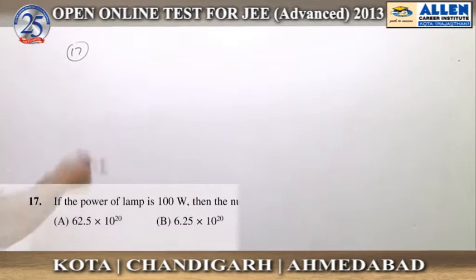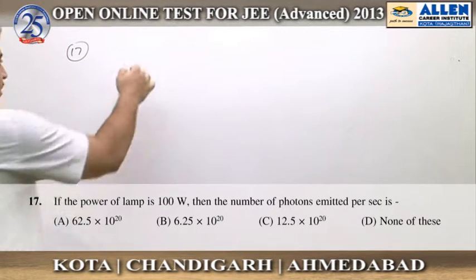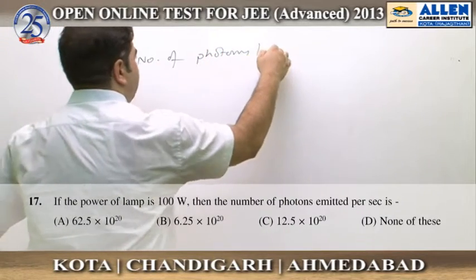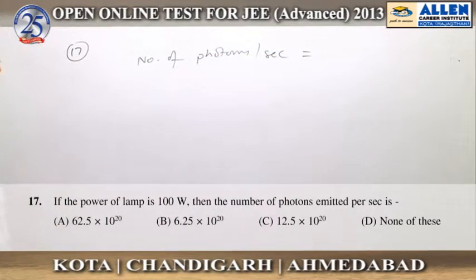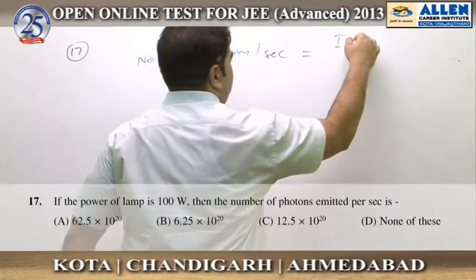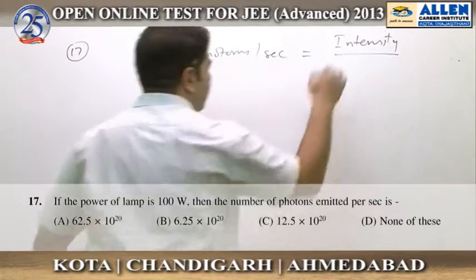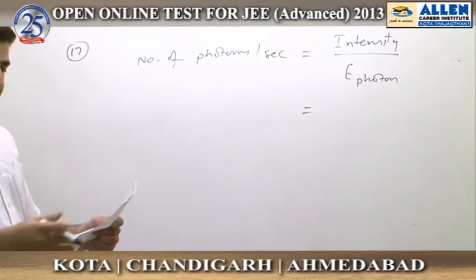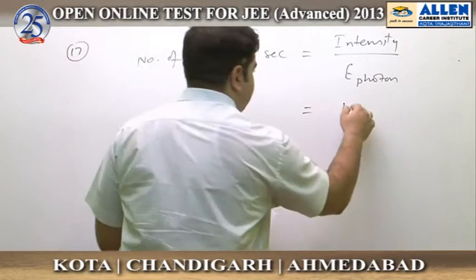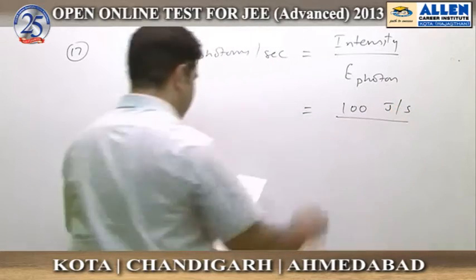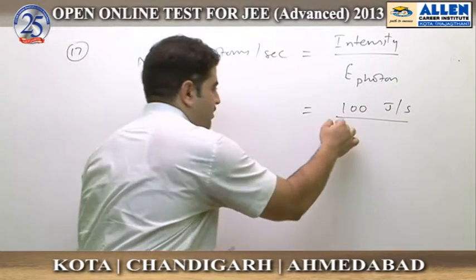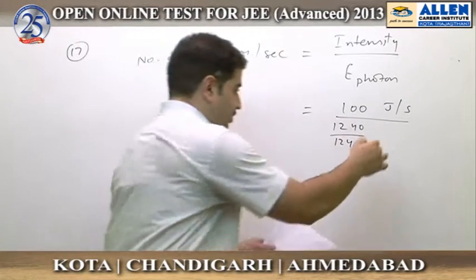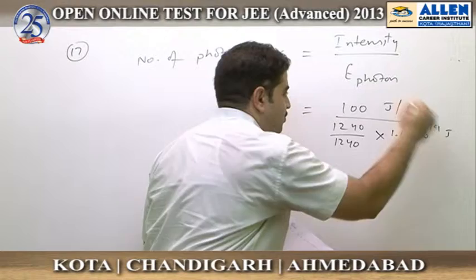In question number 17, we have been asked to calculate the number of photons per second. The number of photons per second can be calculated using the formula: intensity of radiation divided by energy of a single photon. Using the given values, intensity is 100 joules per second, and the energy of each photon is 1240 divided by 1240 in electron volts, which equals 1.6 × 10⁻¹⁹ joules.